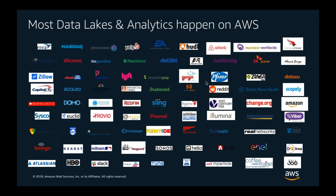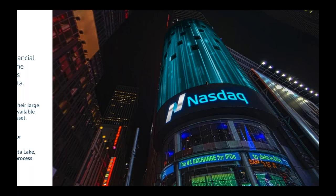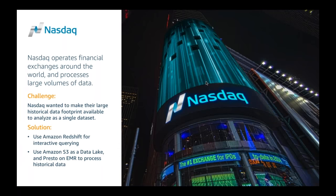Beyond Netflix, we have a wide range of customers doing very innovative things on the analytics side on AWS — from large startups to very large enterprises. For example, highly regulated enterprises like FINRA and NASDAQ, and large consumer business companies like Lyft, Yelp, and Airbnb, are all doing innovative things on the AWS analytics platform.